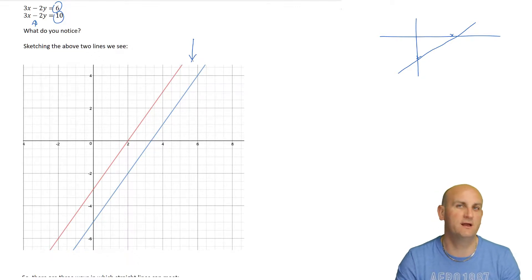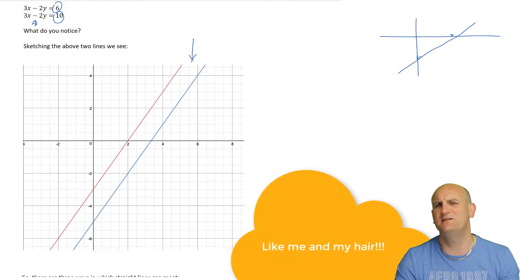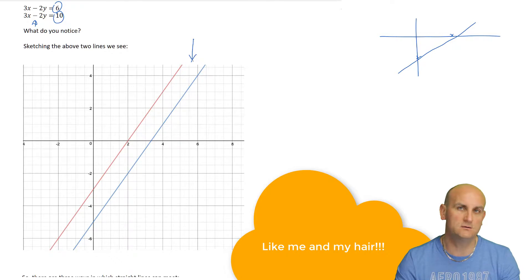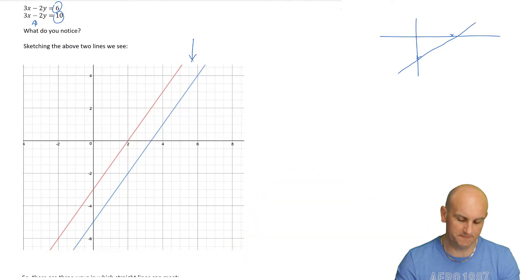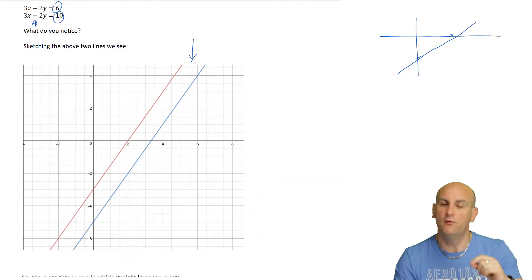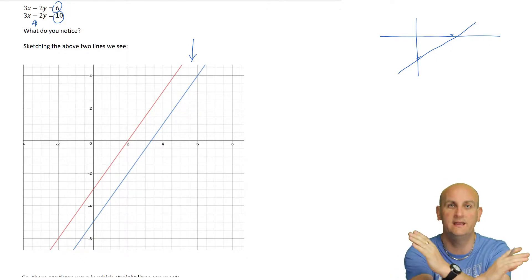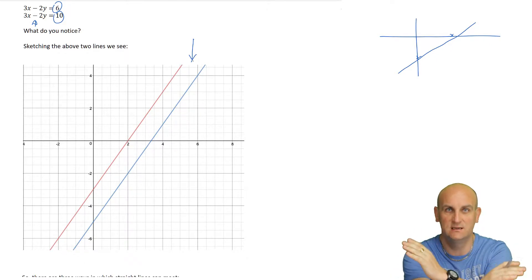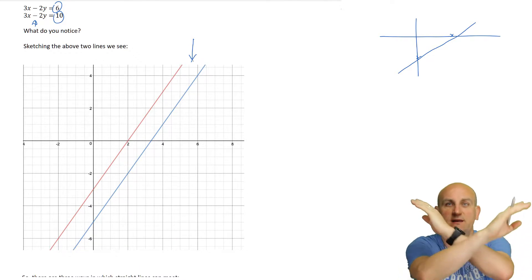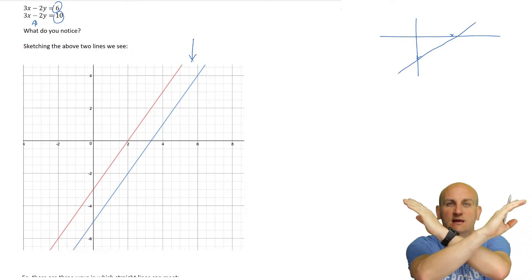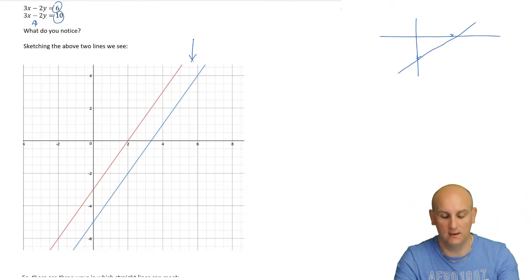The great thing about parallel lines is they are never going to meet, and if they're never going to meet, we can't solve them for a crossing point. Remember, simultaneous equations are finding the solution where lines meet, so generally speaking they will meet in one place, if we're lucky.